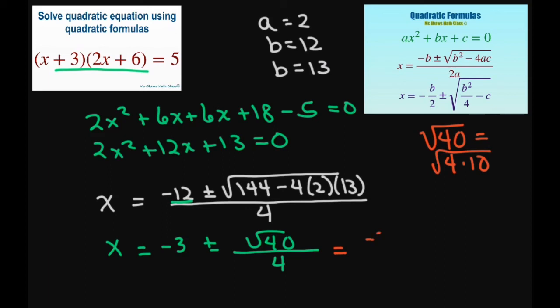So we're going to have negative 3 plus or minus 2 square root of 10 divided by 4 here. And then 2 goes into 4, 2 times.